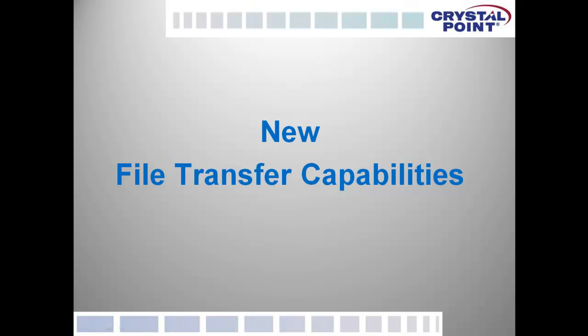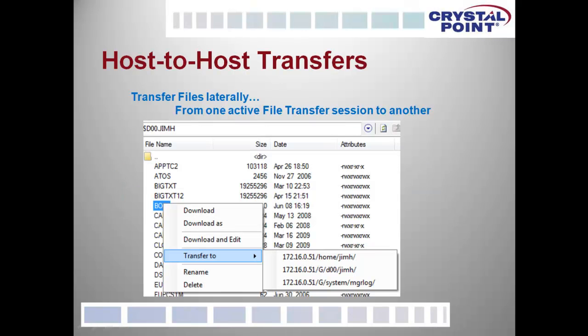We've also worked extensively within OutsideView 8.1's file transfer module. We've given you the capability to transfer files laterally from host to host without having the file transit through the workstation as a separate step. Simply select the file, right-click on it, say Transfer To, and you get a list of all the other active file transfer sessions — whether FTP, SFTP, or SSL-secured FTP — and you can send a file laterally to another host.